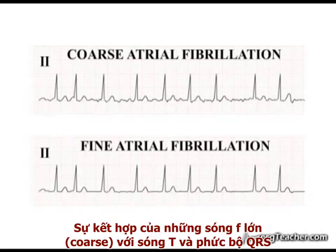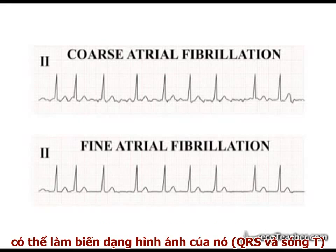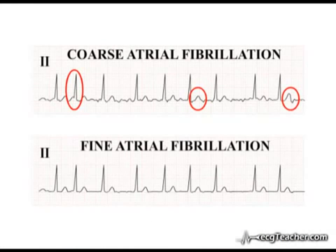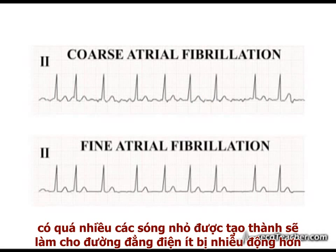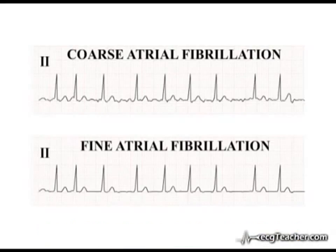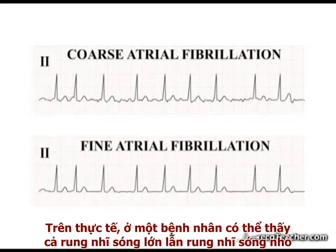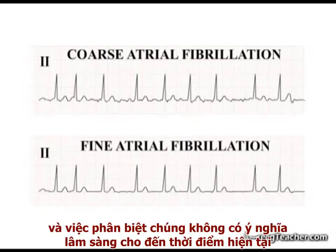Coarse atrial fibrillation may distort their appearance. Fine atrial fibrillation occurs when the number of atrial sites depolarizing is larger, the multitude of smaller individual wavelets resulting in less net disturbance of the isoelectric line. In reality, a full spectrum between coarse and fine atrial fibrillation is observed in patients, and the distinction has no clinical significance at the present time.